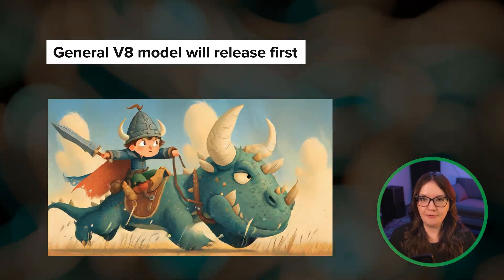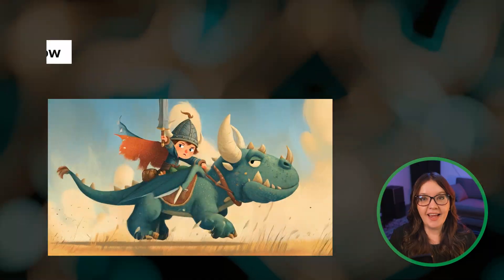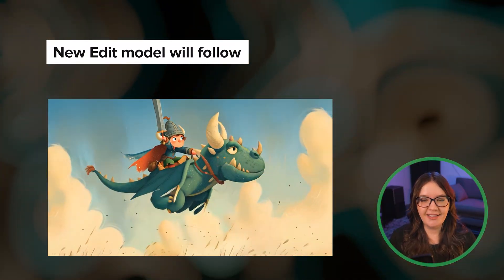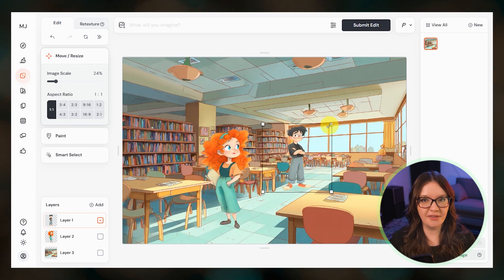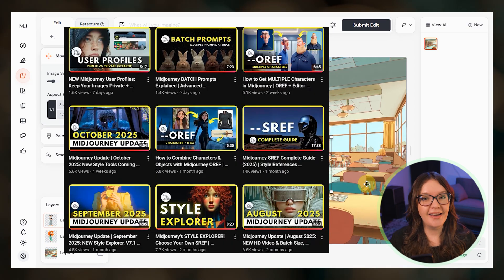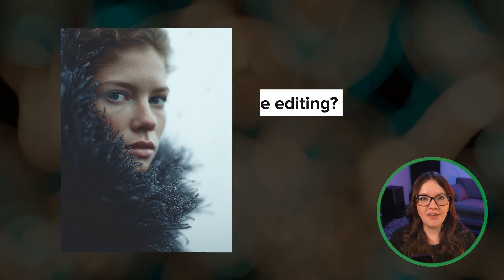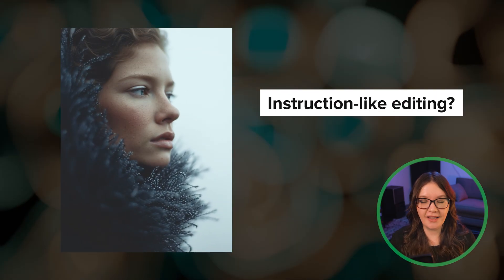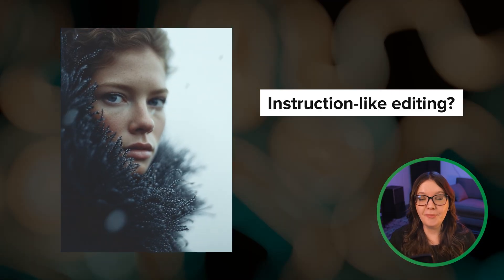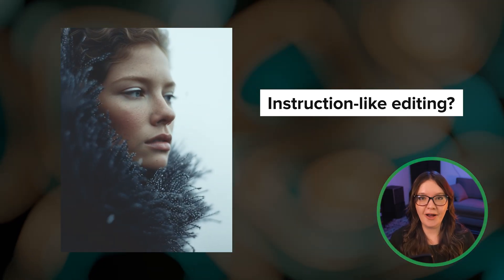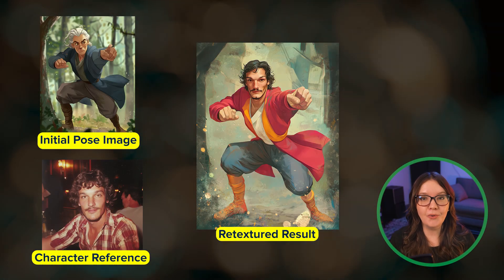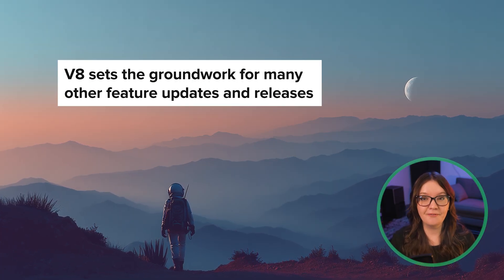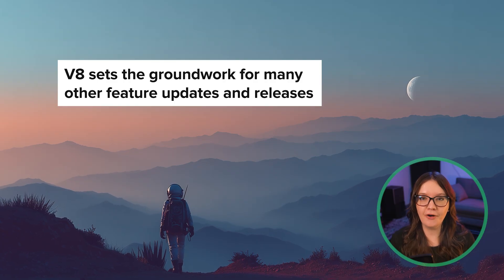They plan to release the general model first and follow it with an updated edit model. The edit model will include better inpainting and multiple reference capability so you can combine a scene with characters and objects more seamlessly. They also want to enable instruction-like editing where you type out the edits you want to make and MidJourney will do them. They're also planning to release an updated retexture feature and new upscalers. Basically v8 will be released and then we'll see a cascade of several other feature updates, some of which feel long overdue.